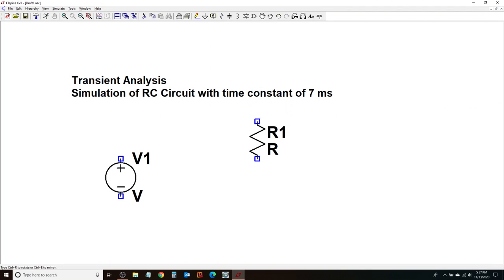I'm going to pick up a resistor. I'm going to do a control R to rotate it, place it over here, escape out of that. I'm going to also need a capacitor. So I'm going to pick up a C1 capacitor, place it over here, escape out of that.